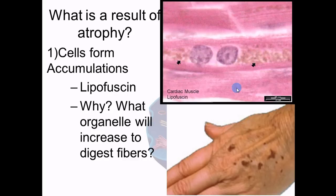Another example where you can see lipofuscin is liver spots on the outside of the body. When skin is exposed to UV radiation, it destroys the cell membrane. Those lipids go inside the cell, the lysosome processes them and turns them into lipofuscin, and since you can't get rid of them, they accumulate. These weakened cells exposed to a lot of UV start showing these liver spots — a similar process to atrophy, but triggered differently.